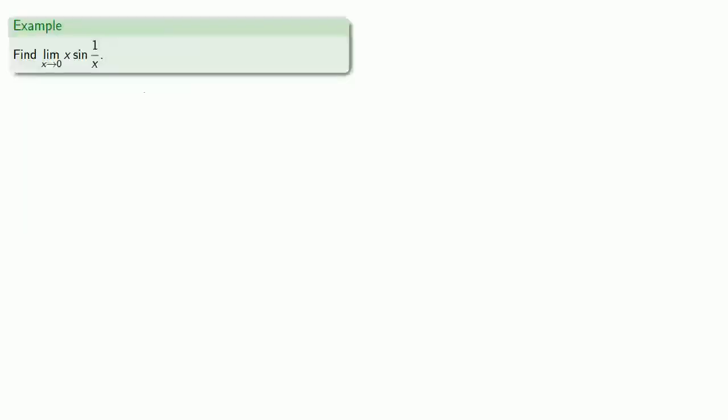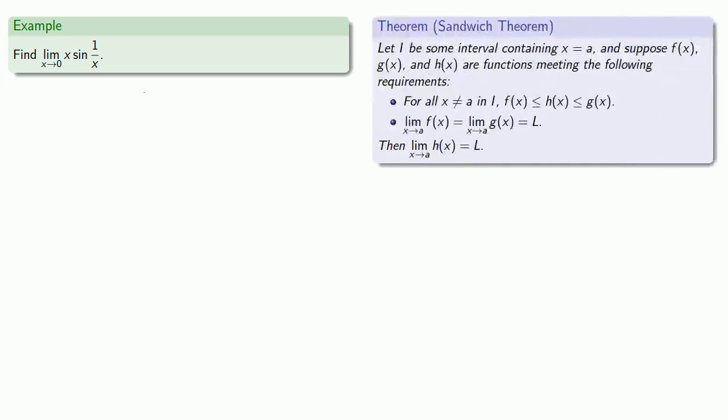For example, suppose I want to find the limit as x approaches 0 of x times sine of 1 over x. So to apply the sandwich theorem, we'll want to find some interval containing our limiting value. And on that interval, we want to find two functions f and g, where f is less than or equal to x sine of 1 over x,